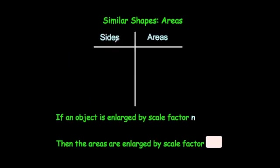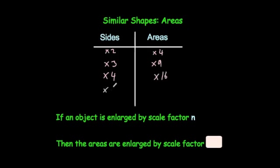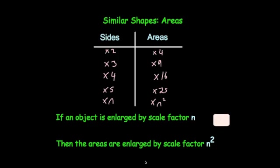So if we times the sides by 2, the areas were 4 times bigger. When you times the sides by 3, the areas were 9 times bigger. When you multiplied by 4, the areas were 16 times bigger. If we were to multiply the sides by 5, a scale factor of 5 for the enlargement, the areas would be 25 times bigger. If we times by a number n, we multiply the area by n squared. So if an object is enlarged by a scale factor n, the areas are enlarged by a scale factor n squared.